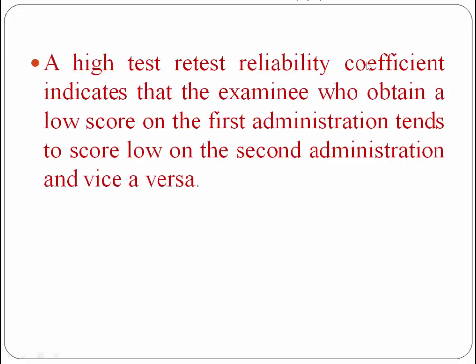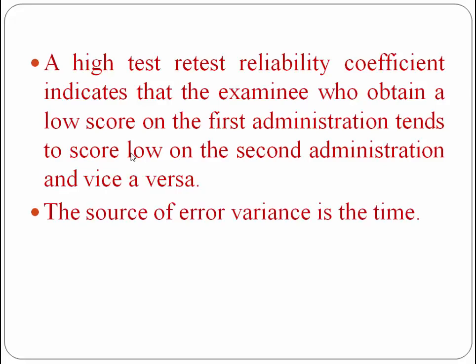A high test-retest reliability coefficient indicates that examinees who obtained a low score on the first administration tend to score low on the second administration and vice versa. If an individual's score is high the first time, it will be high the second time as well. The source of error variance in this method is time — if the time gap is not taken properly, it can introduce error into the scores.